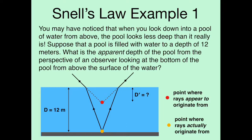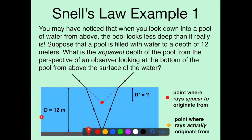You may have noticed that when you look down into a pool of water from above, the pool looks less deep than it really is. In other words, let's say you're up here and you're looking straight down into this pool — it's going to appear to be less deep than it actually is. So let's suppose that the pool is filled with water to a depth of 12 meters. The question is: what is the apparent depth of the pool from the perspective of an observer looking at the bottom from above the surface of the water?